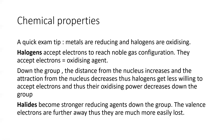Chemical properties: for AS levels, you usually need to know metals and halogens. Metals are reducing agents, so halogens are oxidizing agents. Halogens accept electrons to reach noble gas configuration — thus they are oxidizing agents. Down the group, the distance from the nucleus increases and the attraction from the nucleus decreases, so halogens get less willing to accept electrons and their oxidizing power decreases down the group.